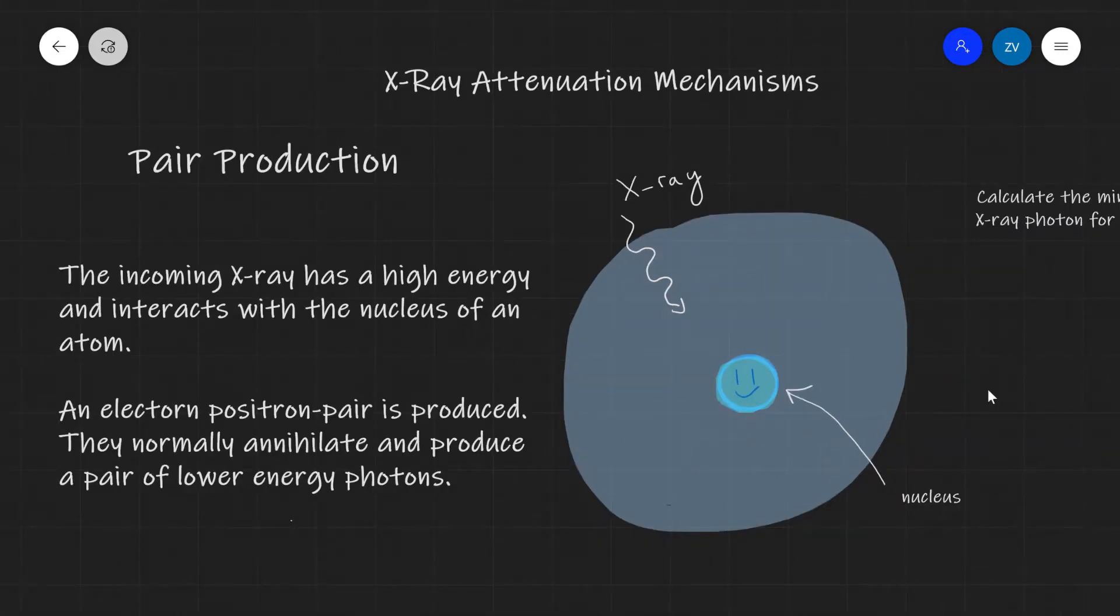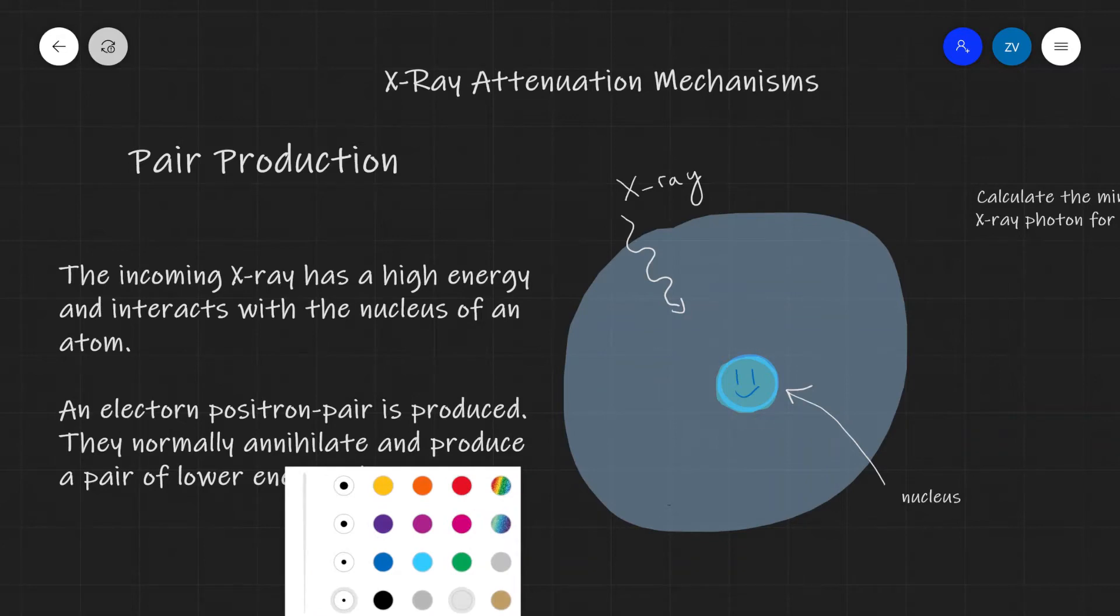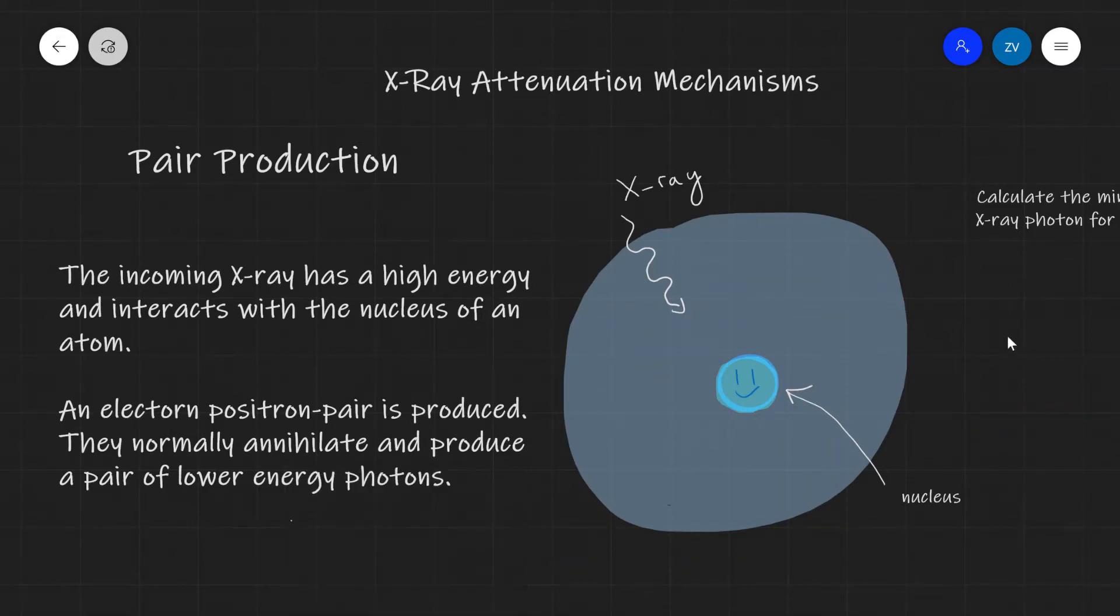The next mechanism that we're going to be looking at is one of the most interesting ones and is known as pair production. Now if the incoming X-ray has sufficiently high energy and interacts in particular with the nucleus of the atom, an electron-positron pair is produced. So this is really amazing. The X-ray after that interaction can literally turn into a pair of opposite particles of matter and antimatter.